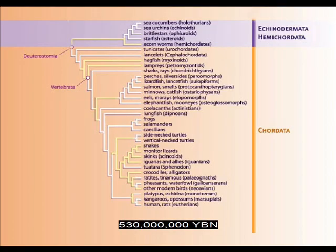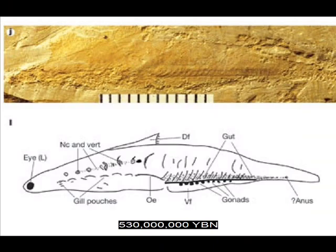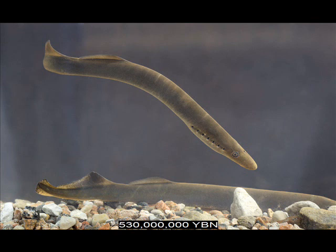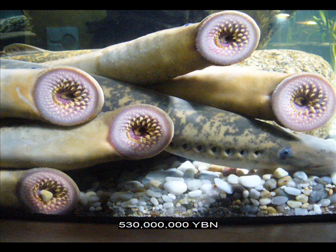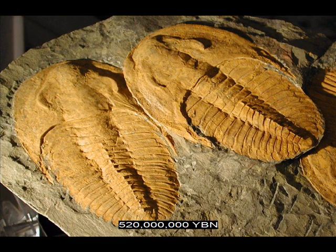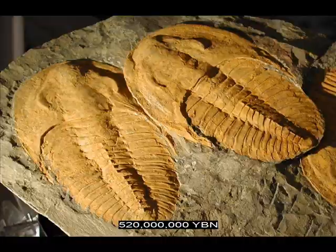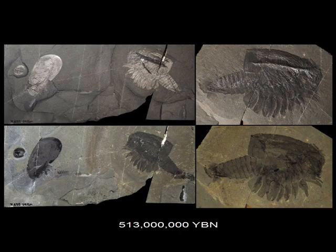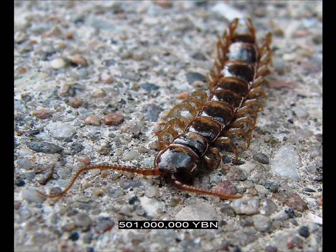Chordata vertebrates evolve — this subphylum contains most fishes and all amphibians, reptiles, mammals, and birds. Vertebrates jawless fish, agnatha, evolve. Earliest color vision evolves in arthropods. The arthropods trilobites evolve. Ancestor of all arthropod crustaceans — shrimps, crabs, lobsters, barnacles. Arthropods myriapoda — centipedes and millipedes. End of the Cambrian and start of the Ordovician period. During the Ordovician, the number of genera will quadruple.